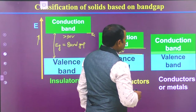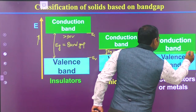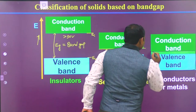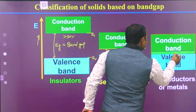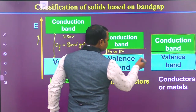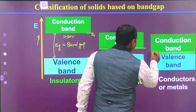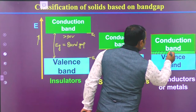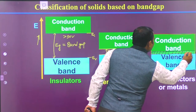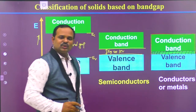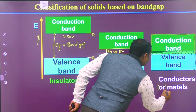There are some other materials where the valence band and conduction band are both overlapping in some region. This is the overlapping region — both conduction band and valence band are overlapping. That means there is no band gap in certain materials. Those kinds of materials are called conductors or metals.